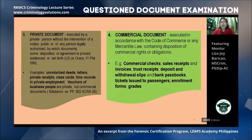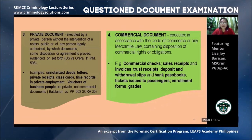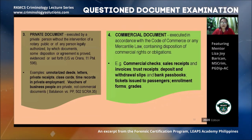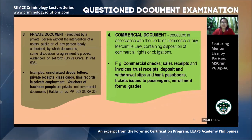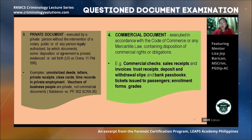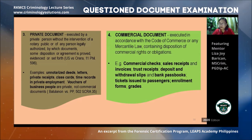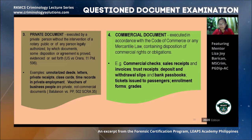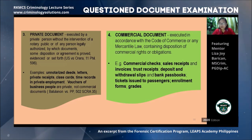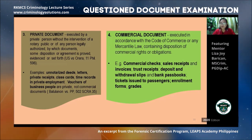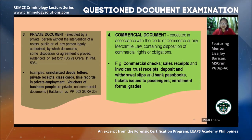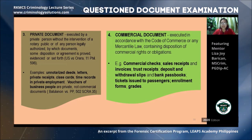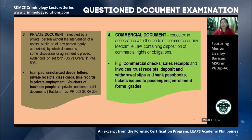Private documents are executed by a private person without the intervention of a notary public or any legally authorized person, by which some disposition or agreement is proved, evidenced, or set forth — no notarization involved. For example, an Affidavit of Loss from your school is a private document while it has not yet been notarized. Once notarized, it becomes a public document. Examples of private documents include unnotarized deeds, letters, private receipts, class cards, time records in private employment, and vouchers of business people.